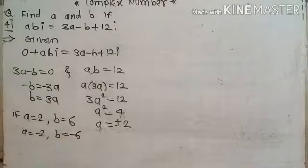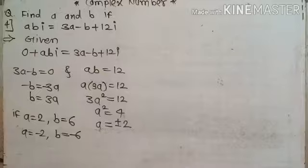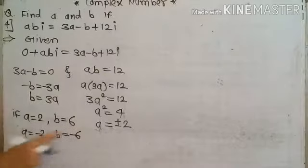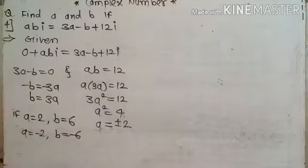Taking square roots on both sides, a is equal to plus or minus 2. After pairing: when a equals 2, b equals 6, and when a equals minus 2, b equals minus 6.